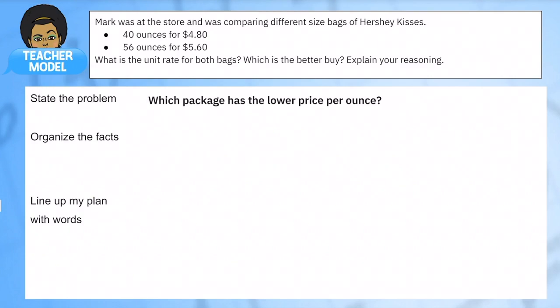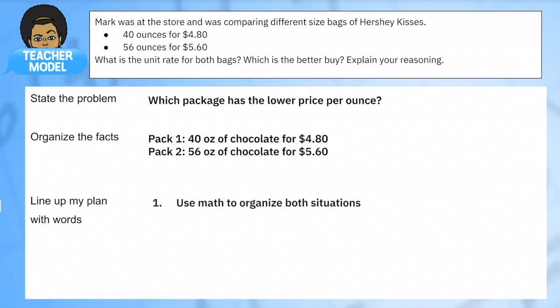Let's look at our information. We know that one pack is 40 ounces of chocolate for $4.80, and our second pack is 56 ounces of chocolate for $5.60.